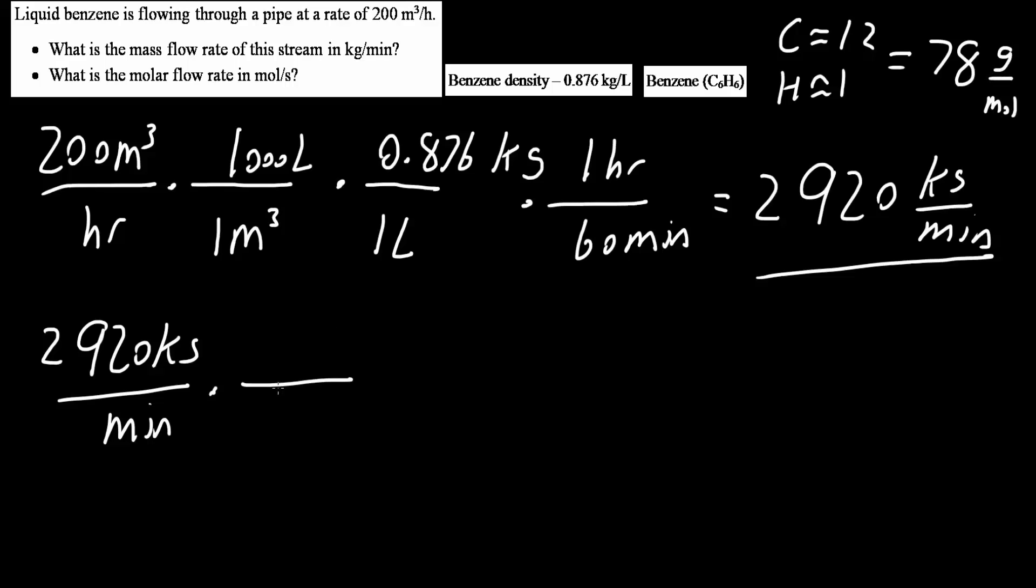In our case, we could say 78 kilograms per kilomole. 78 kilograms per kilomole is equivalent to grams per mole. And now we need to convert kilomoles into moles.